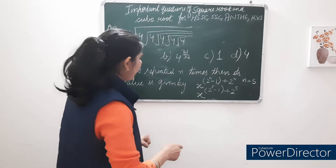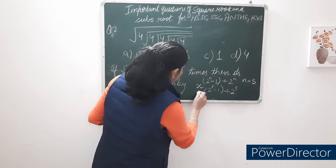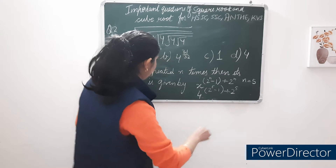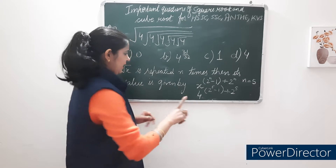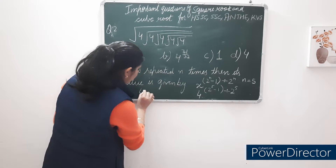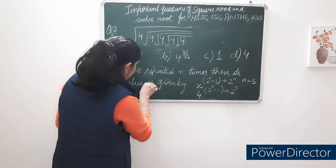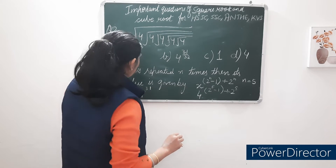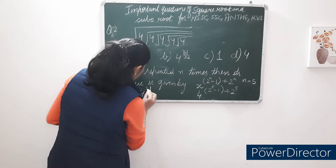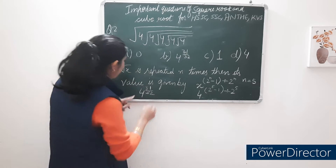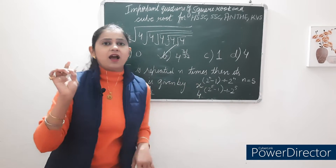x is 4 and n is 5. So the answer is 4^((2^5 − 1) / 2^5) = 4^((32 − 1) / 32) = 4^(31/32). Option B is the correct answer.